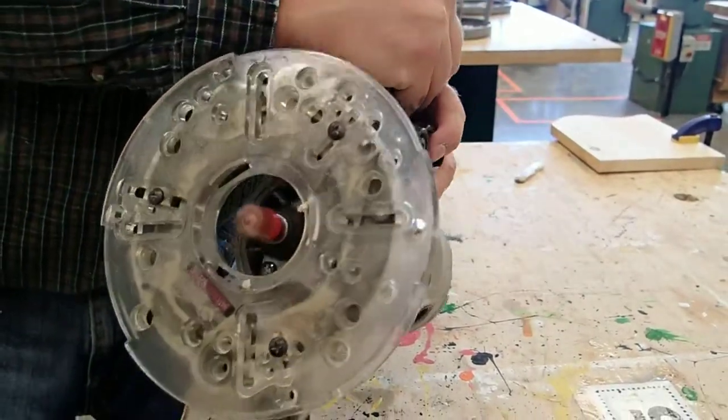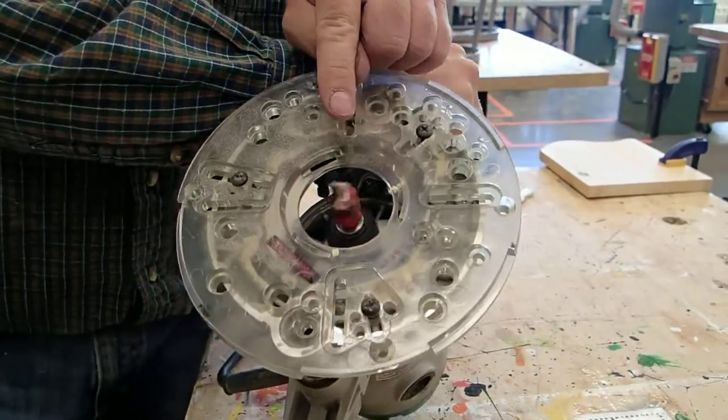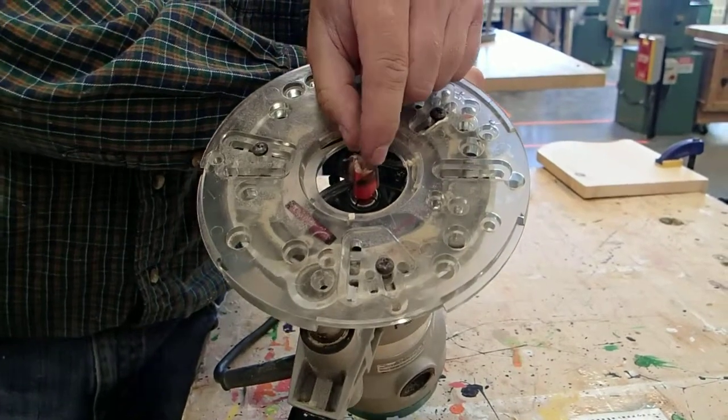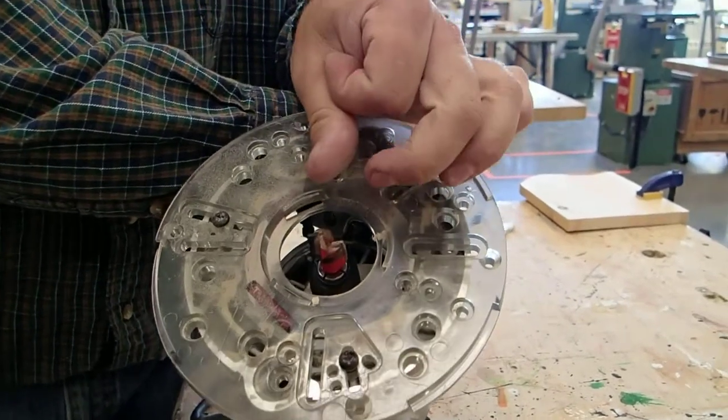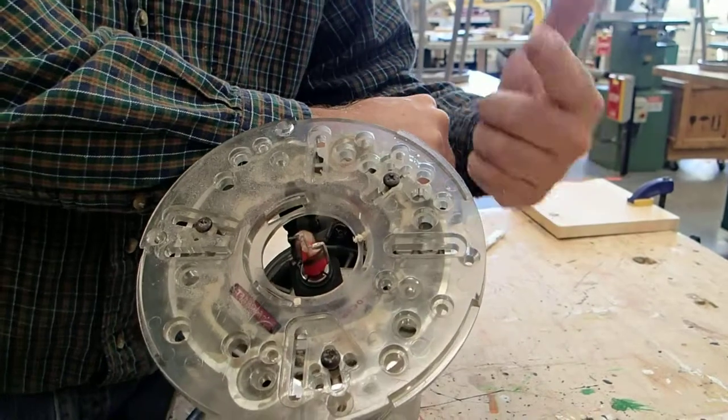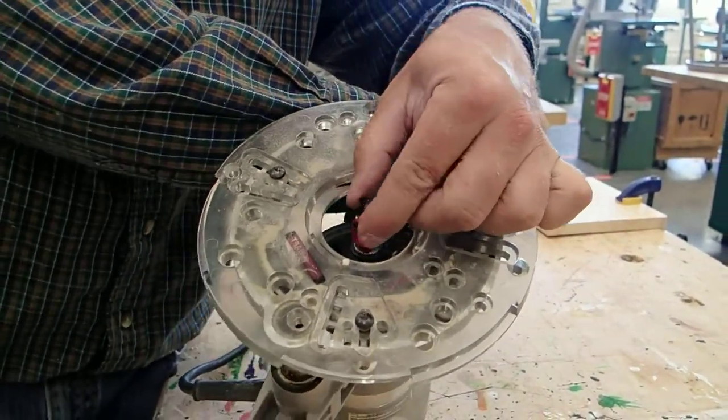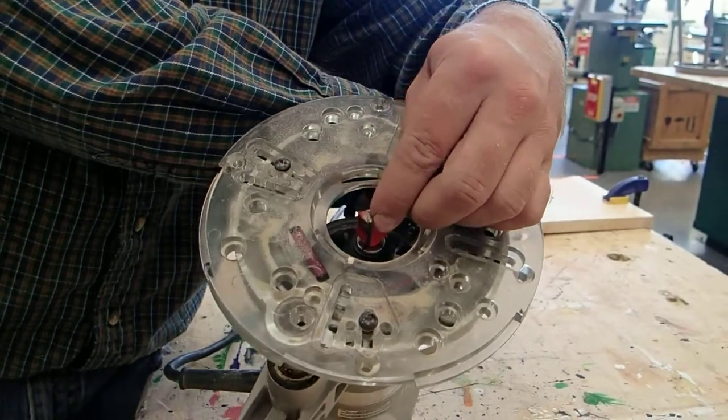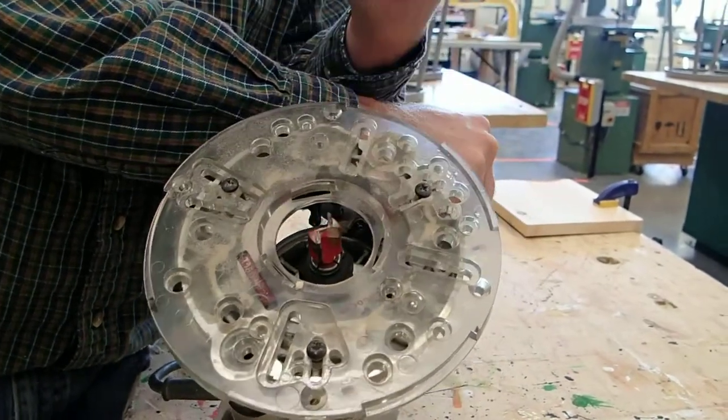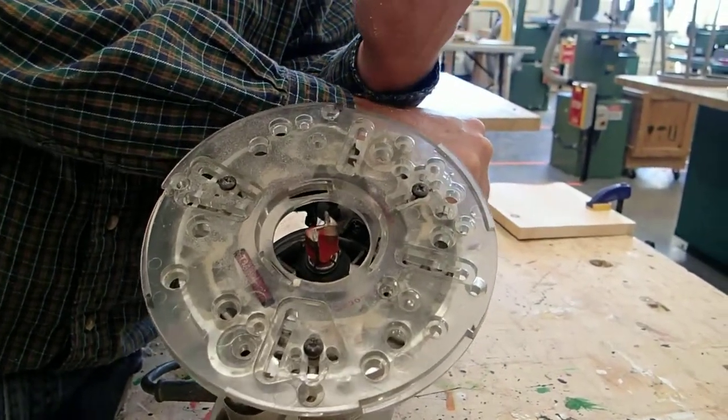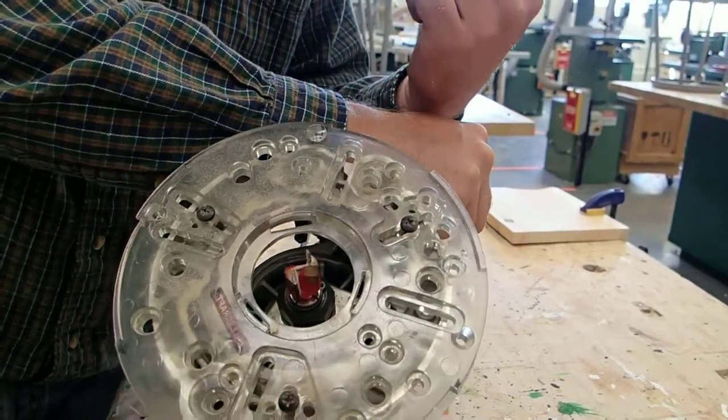Now what that does is, if you had a router bit that is really small, like a one-eighth inch router bit, you would want the speed to go a lot faster because it's small. But if you have a three-quarter inch router bit, you want the speed to go a lot slower because it's taking a way bigger cut.